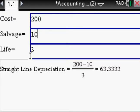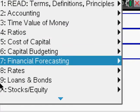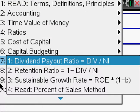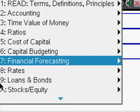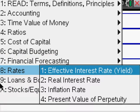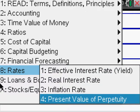Financial forecasting: we have retention ratio, growth rate. For rates, we have the effective interest rate, the real interest rate, inflation rate, and present value of a perpetuity.